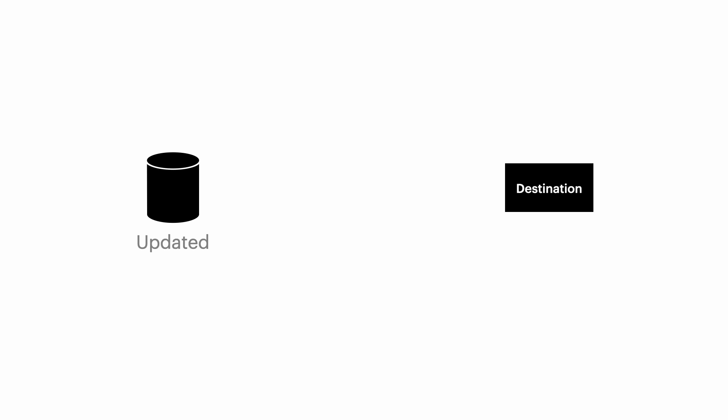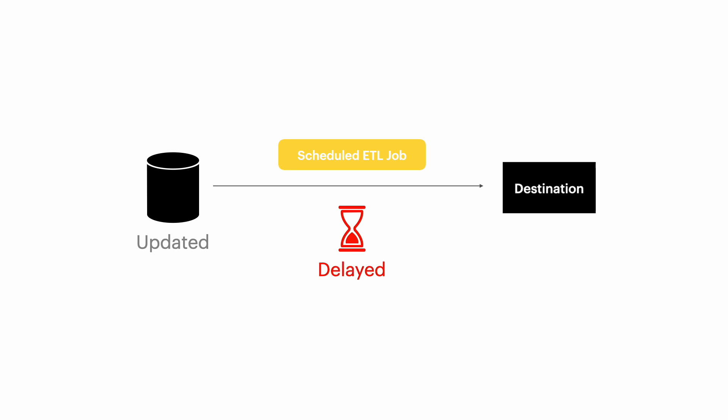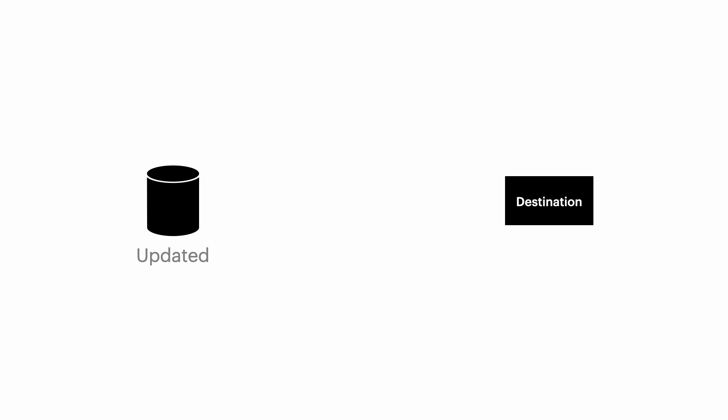Traditionally, ETL jobs have been used to capture changes from OLTP databases. These jobs run in scheduled batches, causing consumer applications to wait a few minutes, hours, or even days to access data. For example, a sales manager has to wait until the next morning to access the sales report for a particular day. However, Debezium changes that by capturing database changes as they happen and sending them downstream, enabling consumer applications to receive and react to changes in real-time.